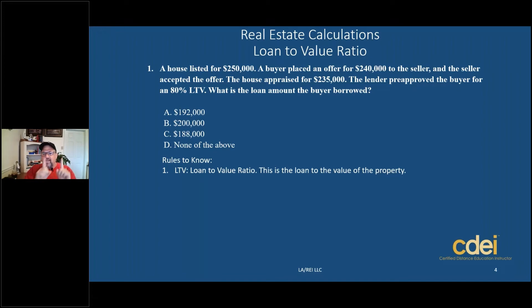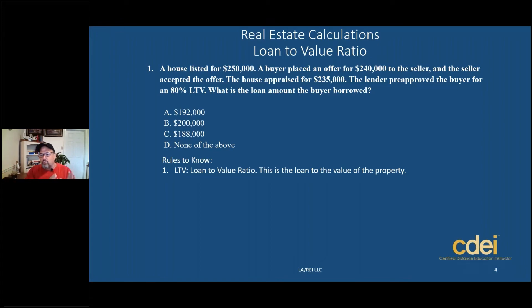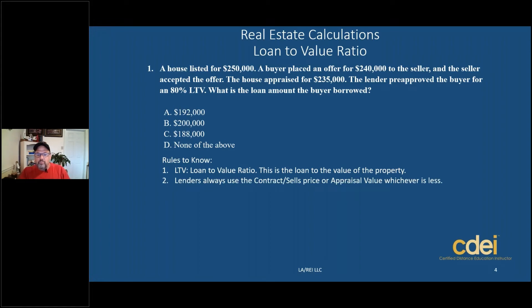Simply put, it's the loan to the value of the property — in other words, how much money the lender is going to lend, predicated on the value of the property as a percent or ratio. It's the loan amount the buyer is going to be lent relative to what the property is worth: the cost, sales price, contract price, or appraised value, whichever is less. Lenders will always use the contract price or sales price or appraised value, whichever is less.